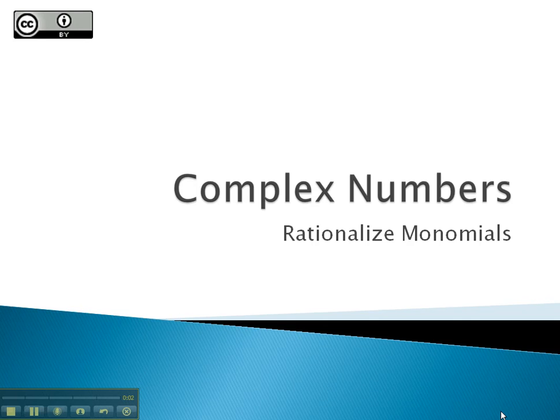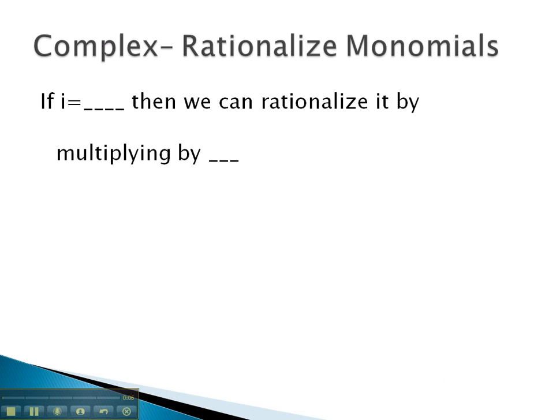In this video, we will look at rationalizing denominators that have a monomial complex number in it. This is because i is equal to the square root of negative 1. We can't have square roots in the denominator, which means we can't have i in the denominator.